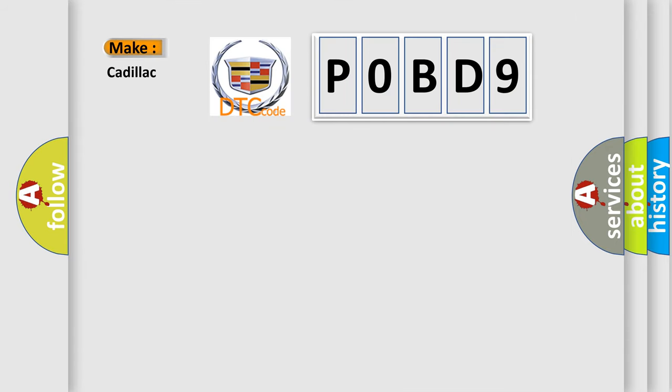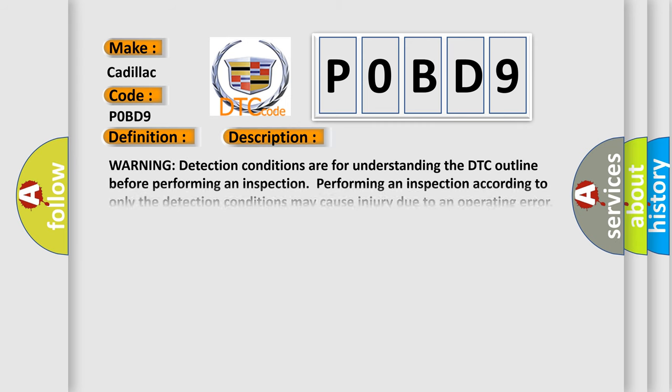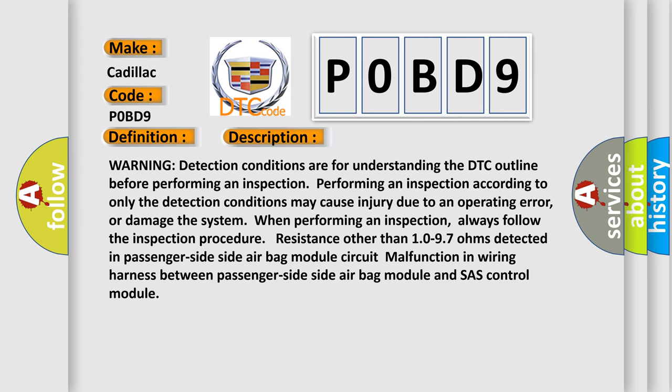So, what does the diagnostic trouble code P0BD9 interpret specifically for Cadillac? The basic definition is: Passenger side airbag module circuit short to body ground. Warning: detection conditions are for understanding the DTC outline before performing an inspection. Performing an inspection according to only the detection conditions may cause injury due to an operating error or damage the system. Always follow the inspection procedure. Resistance other than 10 to 97 ohms detected in passenger side airbag module circuit indicates malfunction in wiring harness between passenger side airbag module and chassis control module.